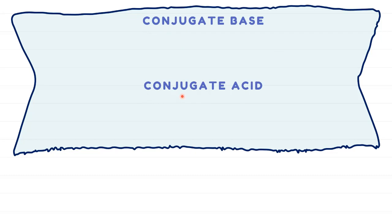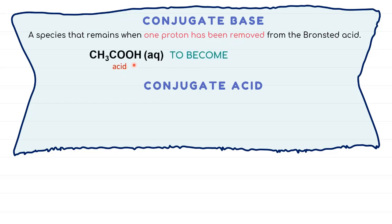In the Bronsted-Lowry acid-base reactions, conjugate base is a species formed after an acid donates its proton. For example, we have acid of ethanoic acid, they will donate their proton in here, the hydrogen, to form ethanoate ion. So the species that remain is called conjugate base.